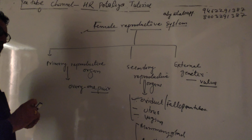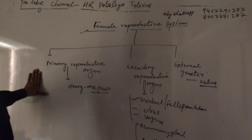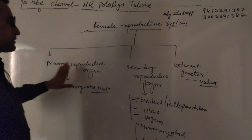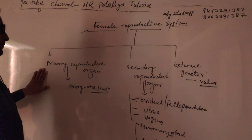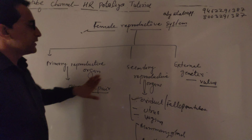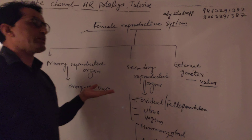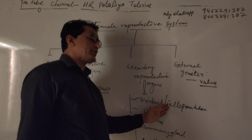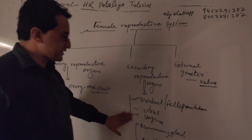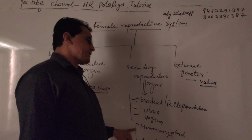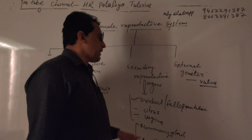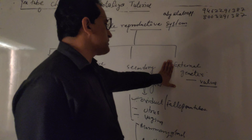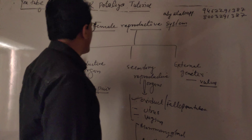The complete female reproductive system is classified into three parts: primary reproductive organ, secondary reproductive organ, and external genitalia. The primary reproductive organ is the ovary — one pair. The secondary reproductive organ consists of ducts and glands: the oviduct or fallopian tube — one pair; uterus — only one; vagina — only one; mammary glands — one pair; and Bartholin glands. The external genitalia, the vulva, is present just outside the female abdominal cavity.